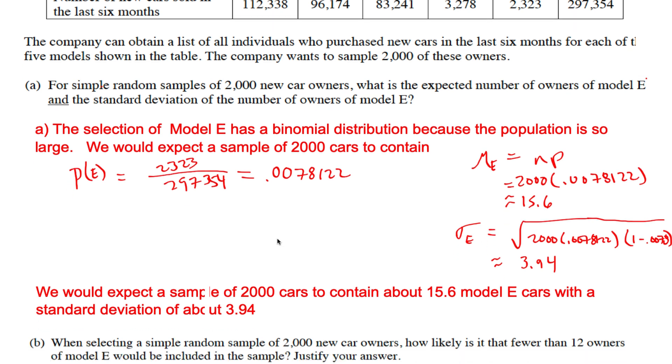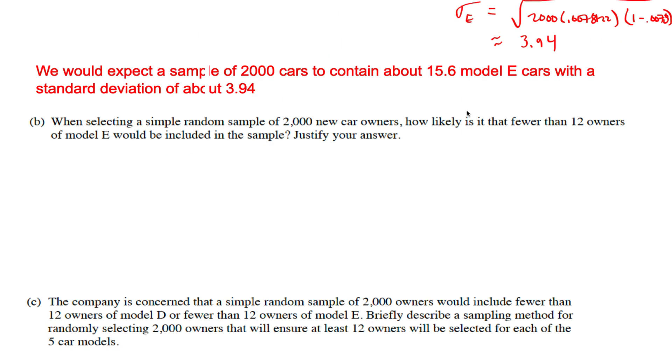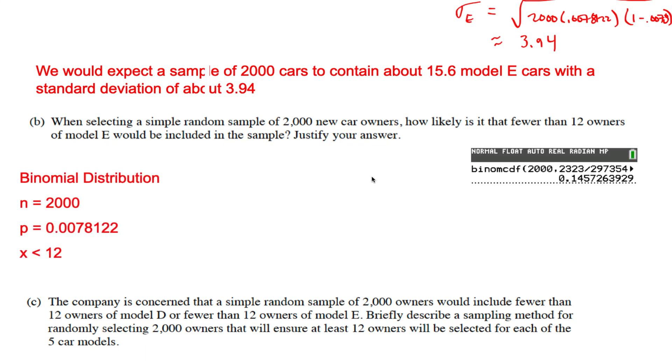Easy enough, and then we move to part B. How likely is it that fewer than 12 owners of model E would be included in the sample? We want zero owners of model E, one owner, all the way up to 11, right? Not including 12. Don't include 12, it doesn't say 12 or fewer. So this is a binomial distribution where n is fixed at 2000, the probability of success is 0.0078 - we figured that out above - and we want x to be less than 12.